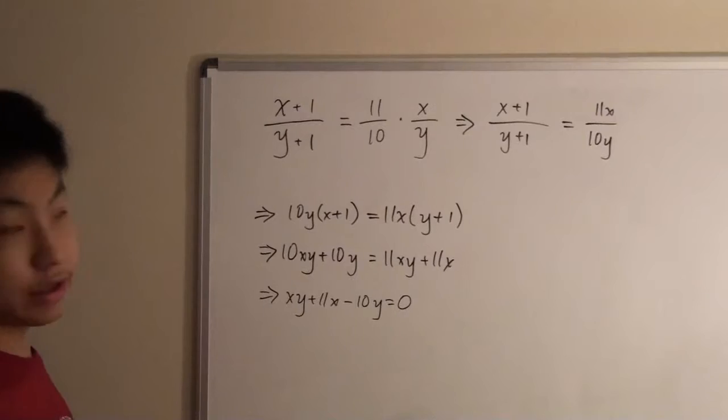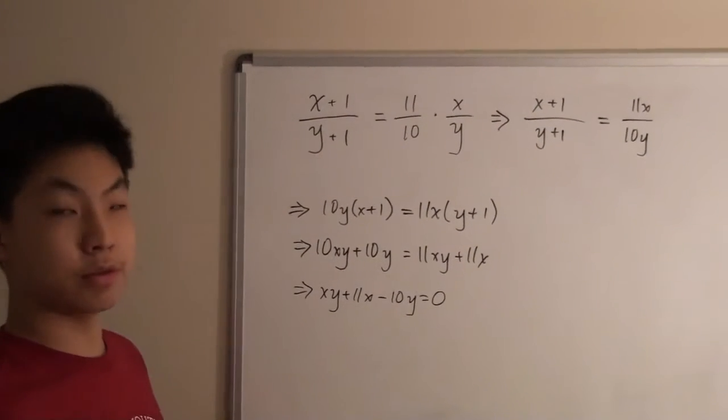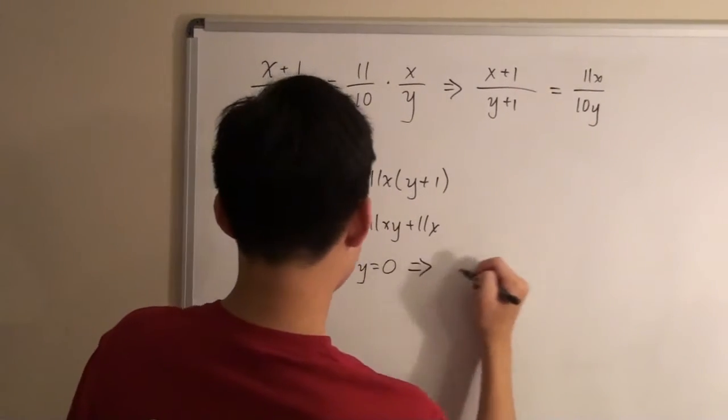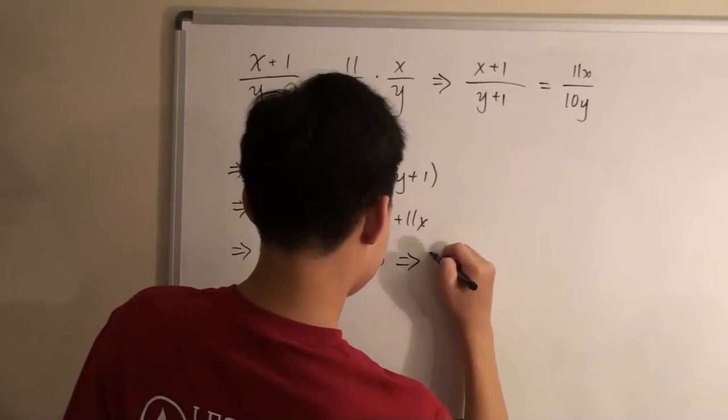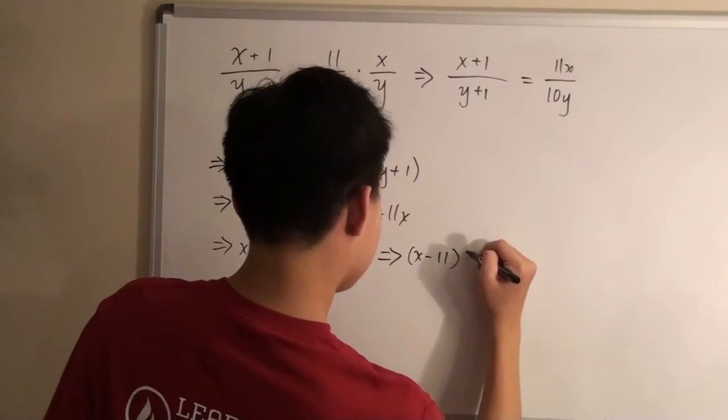And then now we can factor out terms and create something like this. So it would be x minus 10 times y plus 1 equals 110.